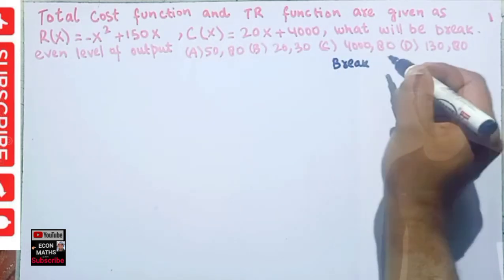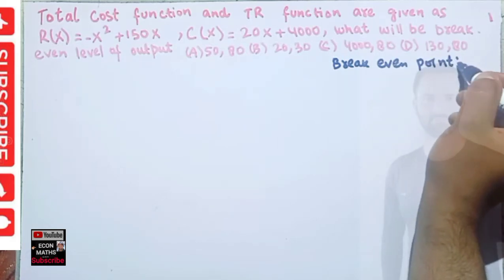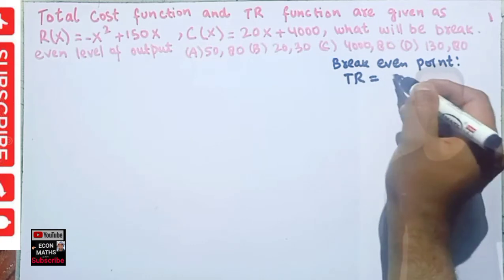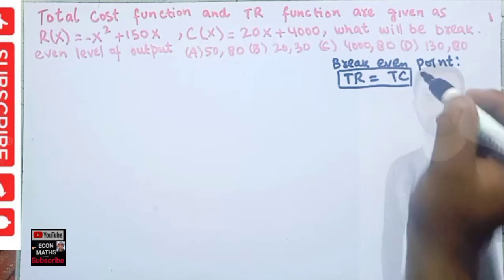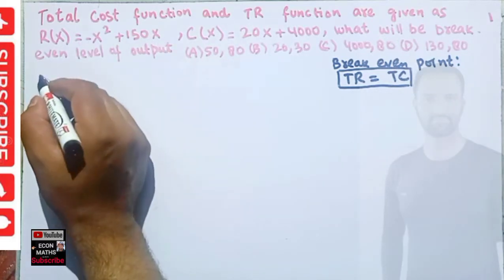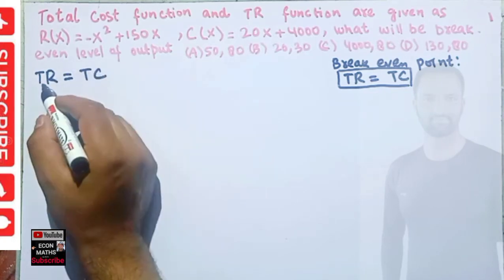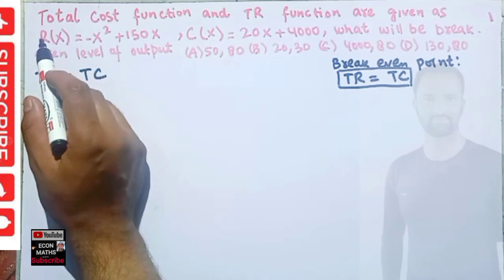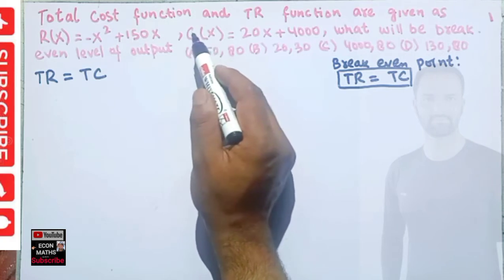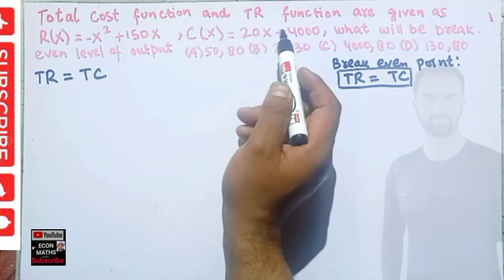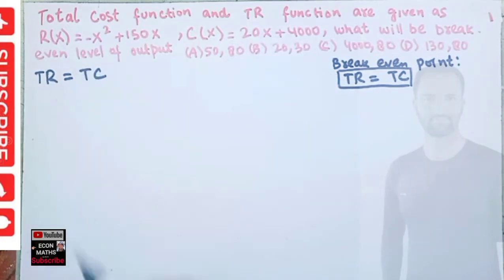Break-even point is that very point where our total revenue is equal to total cost. This is the condition for break-even. So our total revenue R(x), which is revenue as a function of x, should be equal to total cost C(x), which is cost as a function of x — that is the output level.